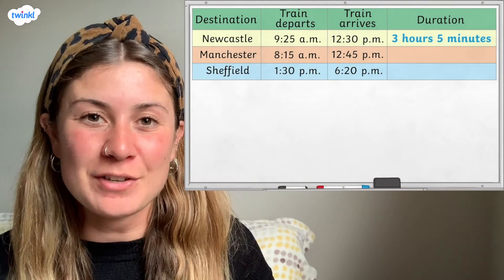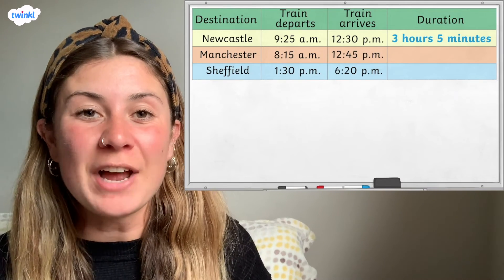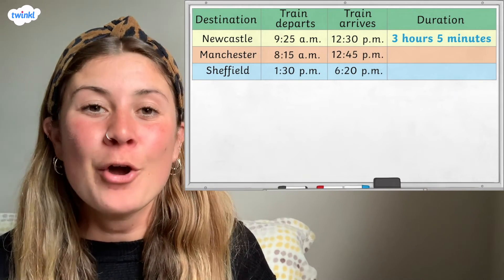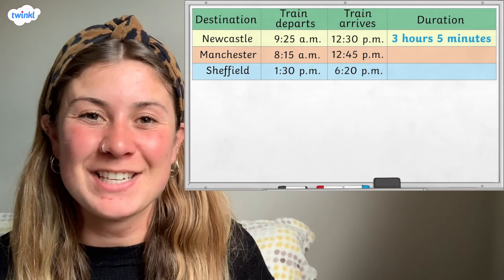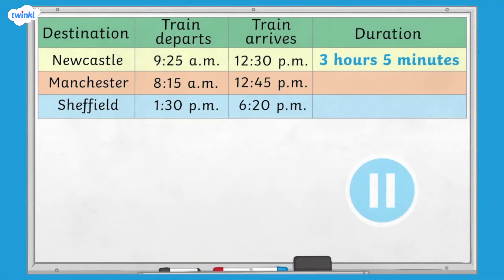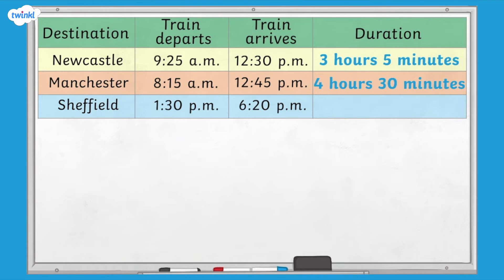Now it's your turn. I'd like you to work out the durations of the train journeys to Sheffield and Manchester. Pause the video here to have a go, and then press play when you're ready to continue. Have you finished? Perfect. Here are the answers. The duration of the train journey to Manchester is 4 hours and 30 minutes. The duration of the train journey to Sheffield is 4 hours and 50 minutes.